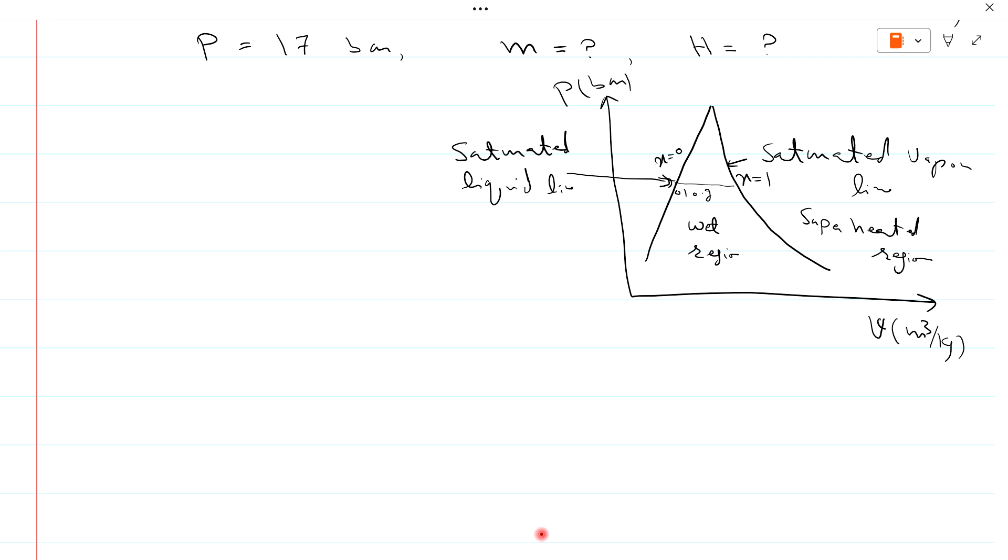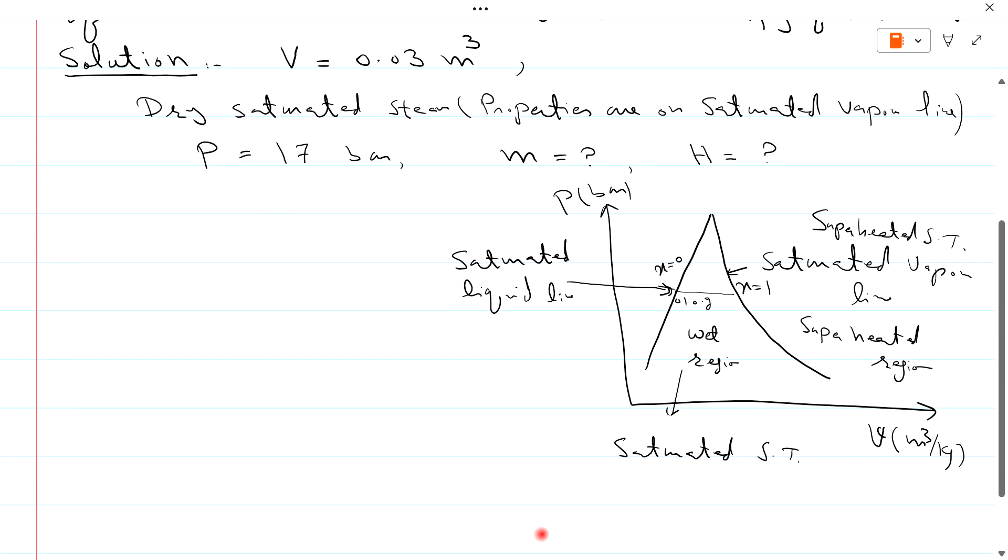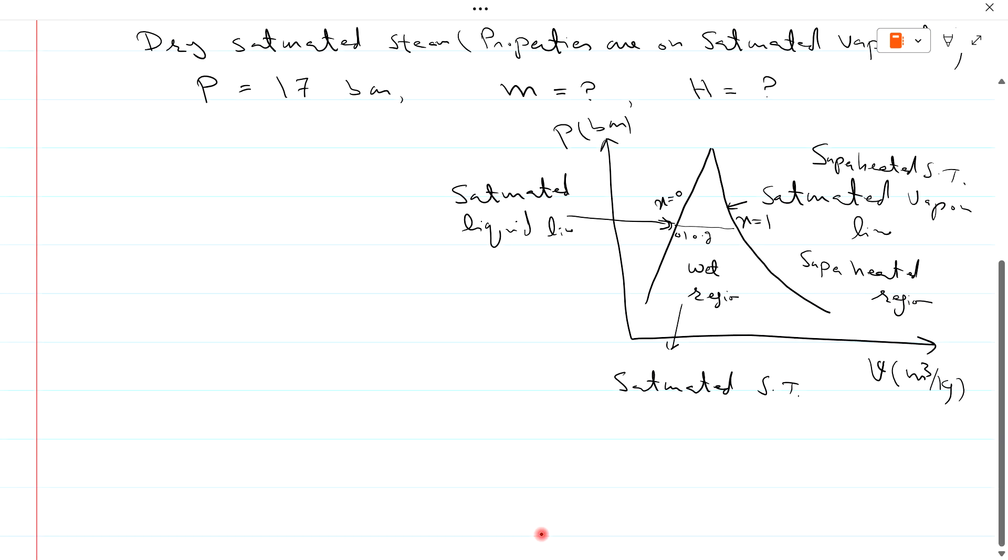We use saturated steam table to solve problems in this region and use superheated steam table to solve problems in superheated region. There is a word in the problem dry saturated steam, it means that the property is on this line.